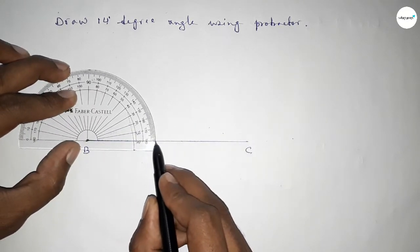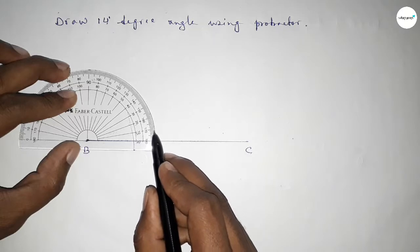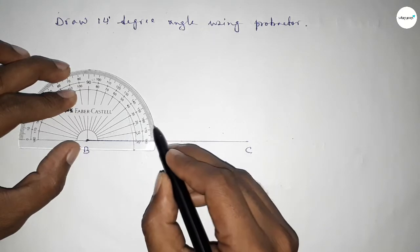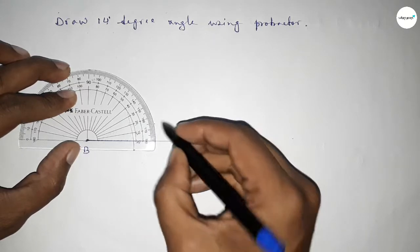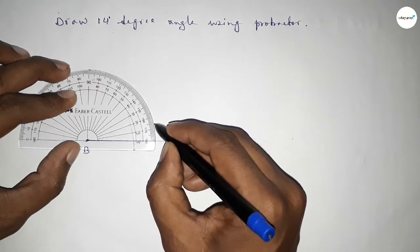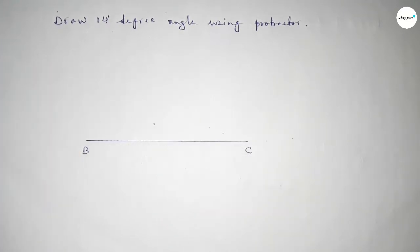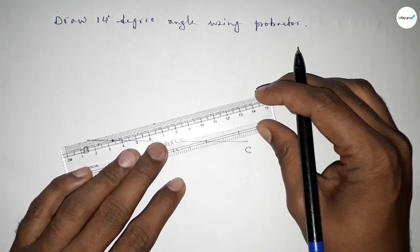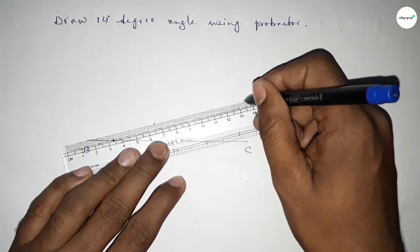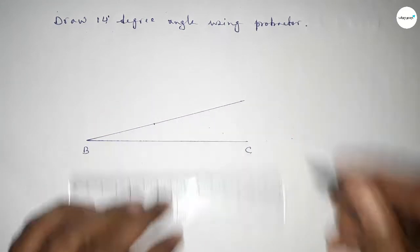And counting angle. So this is 0, 1, 2, 3, 4, 5, 6, 7, 8, 9, 10, 11, 12, 13, 14. So this is 14 degrees. Now joining this side to get 14-degree angle.